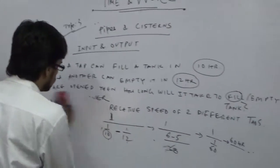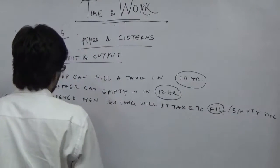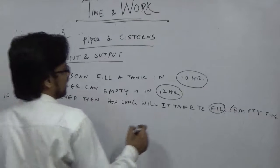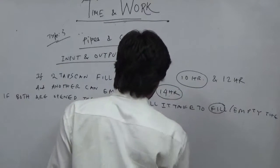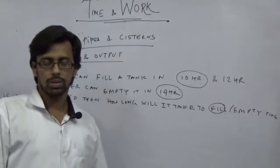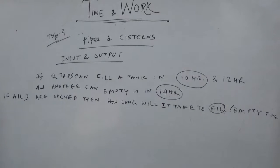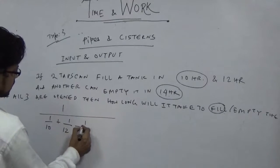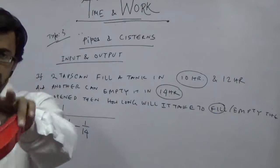Now, if there are 3 pipes: two pipes can fill the tank in 10 hours and 12 hours, and one pipe empties it in 14 hours. If all 3 are open, the rate is 1 by 10 plus 1 by 12 minus 1 by 14.